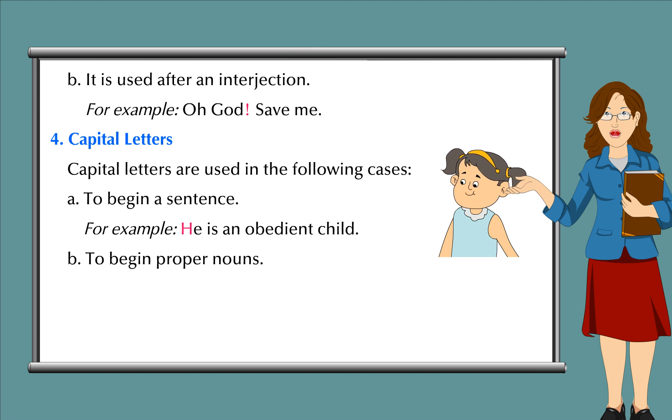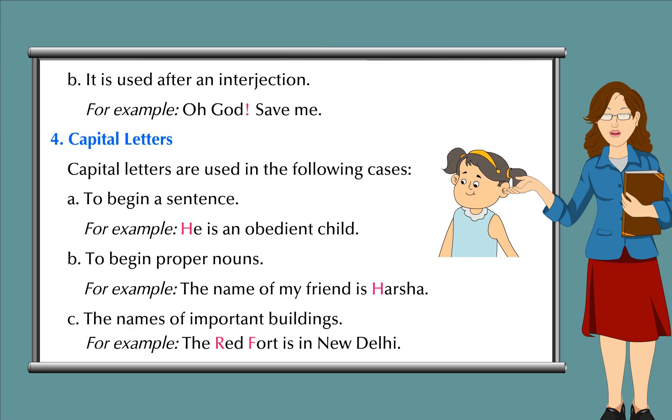B. To begin proper nouns. For example, the name of my friend is Harsha. C. The names of important buildings. For example, the Red Fort is in New Delhi.